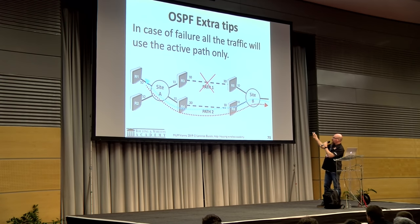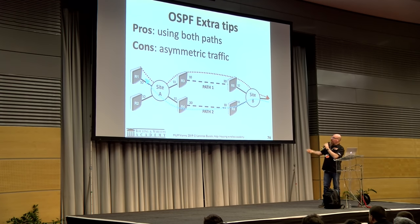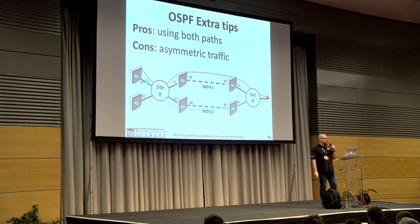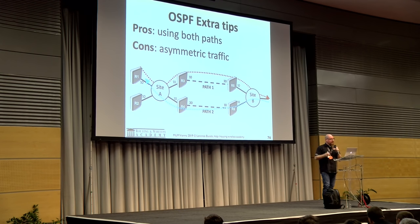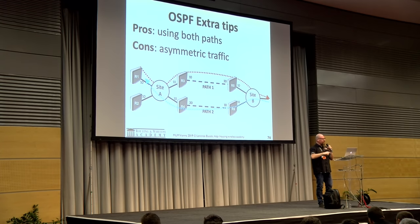In case of failure, all traffic uses the remaining path, so you have redundancy. But you now have asymmetric traffic, which may not be what you want. Often this is a consequence of a bad OSPF design — as seen in the previous slide with two different paths between two routers.